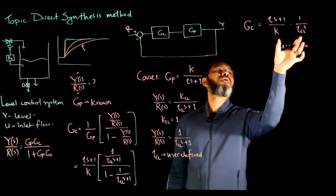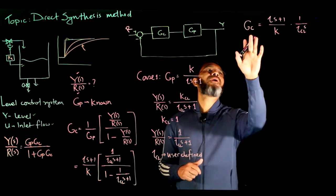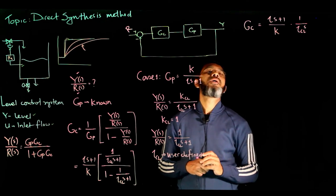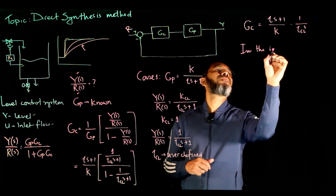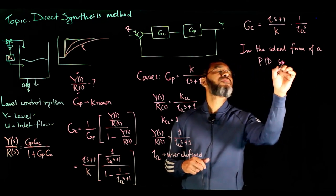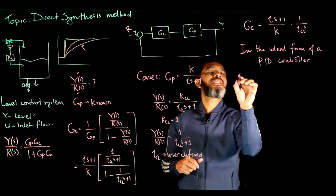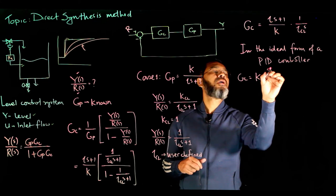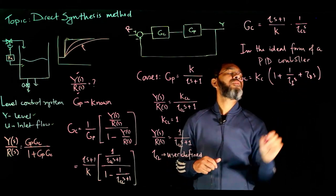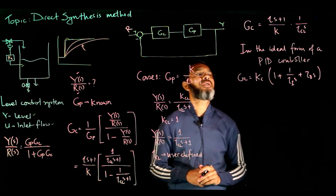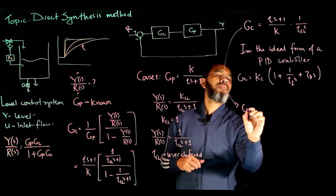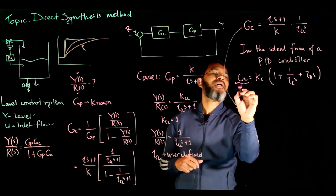Now I want to compare this result with the standard PID controller. The ideal form of a PID controller is: G_c = K_c · [1 + 1/(τ_I · s) + τ_D · s], where the first term is proportional, the second is integral, and the third is derivative. I need to compare the derived G_c expression with this standard PID form to identify the controller parameters K_c, τ_I, and τ_D.